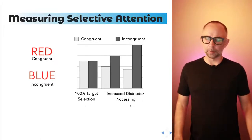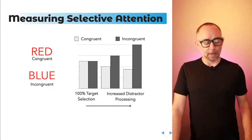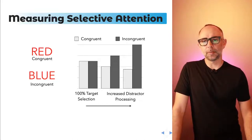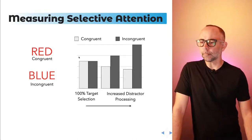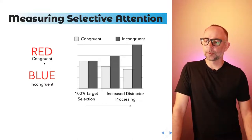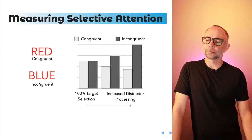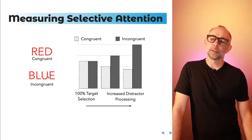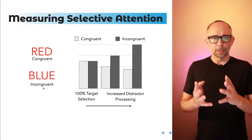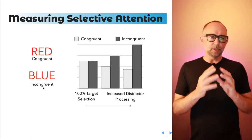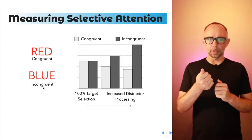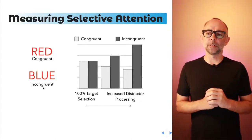Let's be a little bit more specific with our terms. This task and performance in it is often used to measure selective attention abilities. Here we have two example stimuli: the word red in red — a congruent stimulus — which is easy to name the color red. Compare this to the incongruent item where the correct answer is red but the word says blue. Each Stroop stimulus has a color and a word component. The color component is the target information, and the word component is the distracting information.